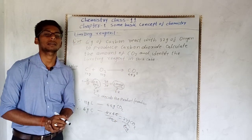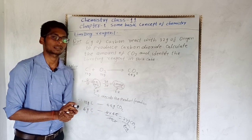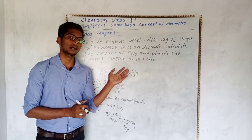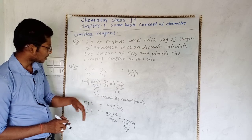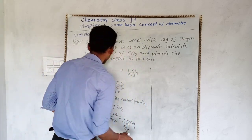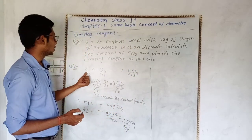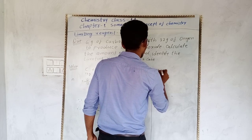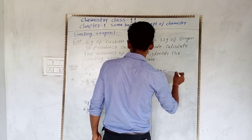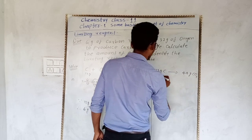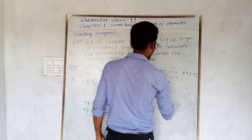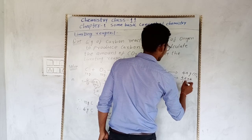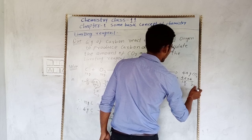इस तरह limiting reagent find कर सकते हैं। Method 3 से verify करते हैं: अगर carbon limiting मानते हैं तो answer 22 grams CO2। अब oxygen का case लेते हैं: 32 gram O2 gives 44×32/32 = 44 grams CO2। दोनों values compare करें: carbon से 22 grams, oxygen से 44 grams। जो value कम है (22 grams) - वह carbon के वजह से है, इसलिए carbon limiting reagent है।